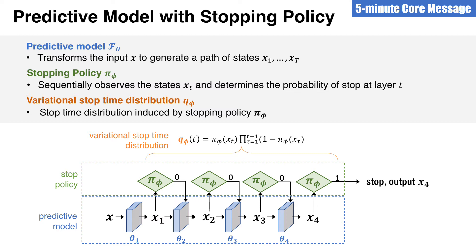To summarize, we are interested in this type of model. It has two components. The first component is a predictive model f_theta that transforms the input x to a sequence of states x_1 to x_T. The second component is a stop policy pi_phi. It observes the state x_t sequentially and determines whether to stop at layer t. This sequential stop policy pi_phi can induce a variational stop time distribution q_phi. It is a variational distribution that gives the probability of stopping at the t-th layer. We will only use the sequential policy pi to sequentially determine whether to stop. However, this induced variational distribution q_phi can help us design the training objective and also the algorithm.